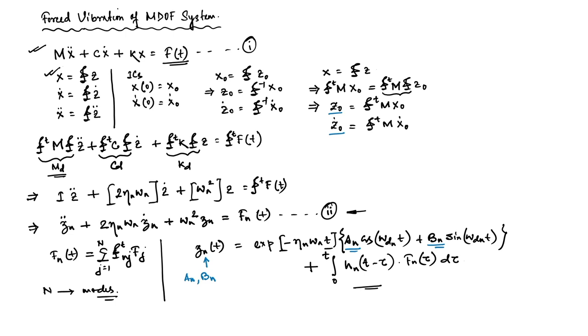Apart from modal superposition we can also treat the coupled equation of motion directly and use other numerical techniques like Wilson-Theta or Newmark-beta to find the solution. In next week's discussion on response due to support motion, we will solve the same system using Wilson-Theta. For today, let us solve a problem using the Duhamel integral code we developed earlier.